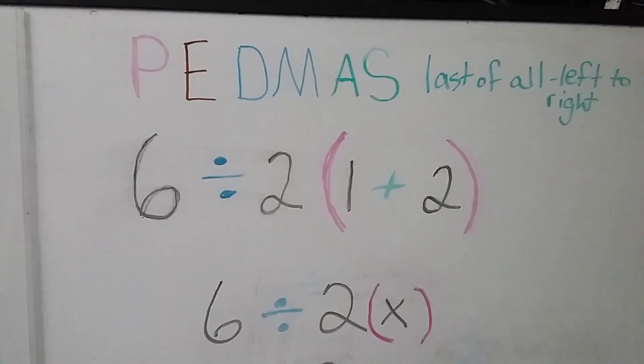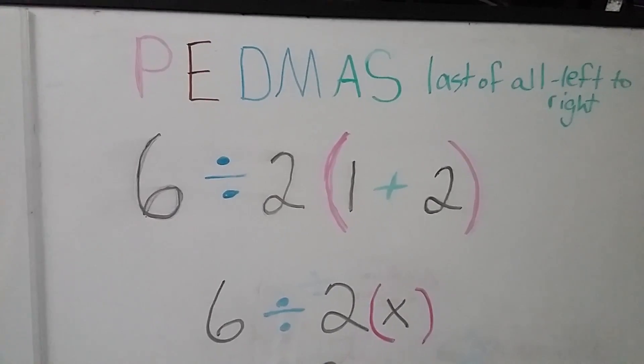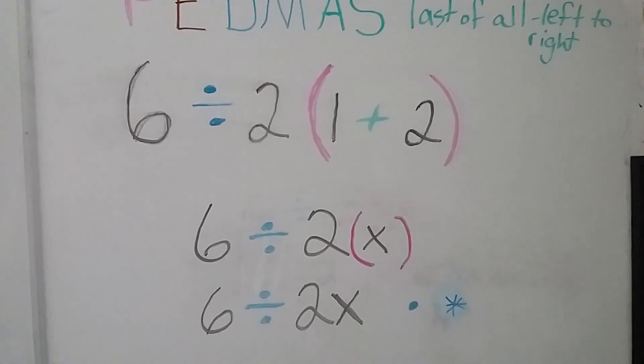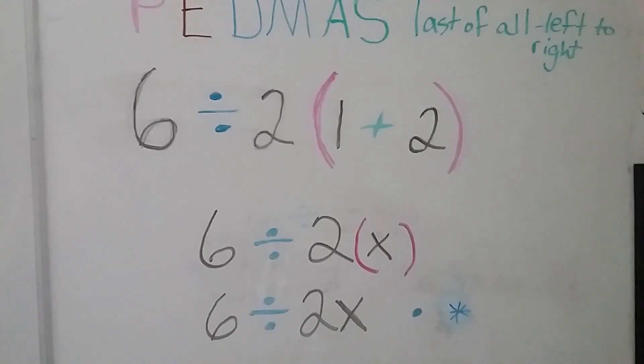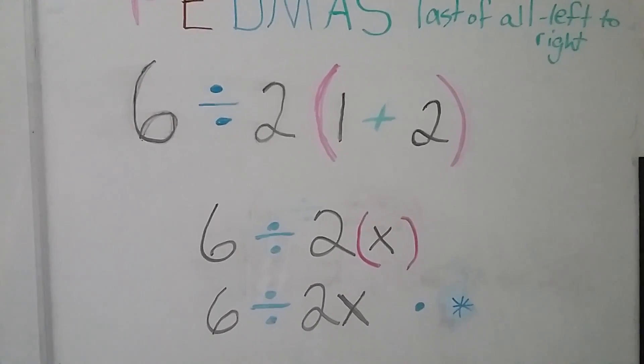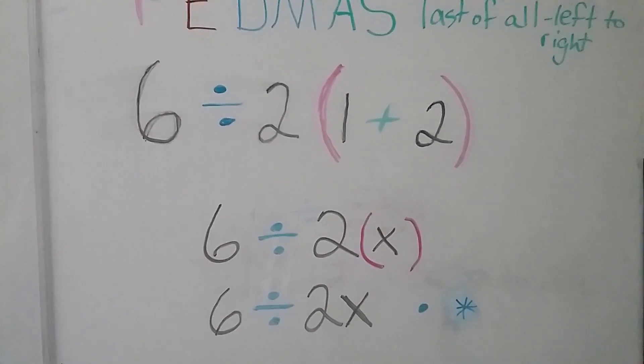6 divided by 2x. Now another way to write multiplication is either to have your numbers next to each other, like we have the 2 right next to the x.